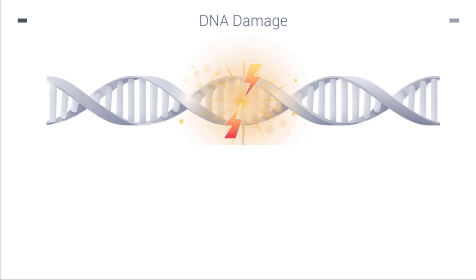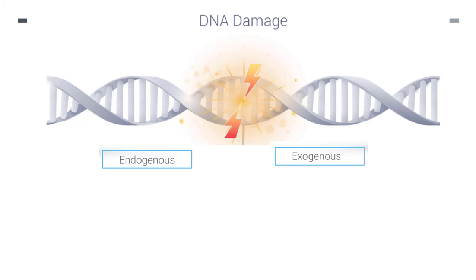We have two different categories for that. One is called the endogenous pathway and the other one is called the exogenous pathway. The endogenous pathway means that all the factors involved in cellular metabolic processes come in this category, while the exogenous pathway includes all the factors that are present environmentally.